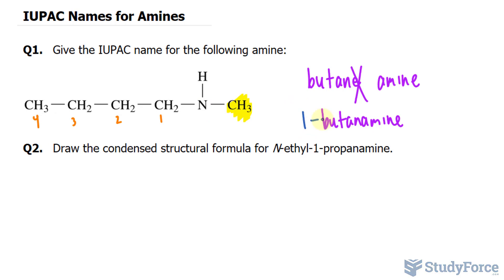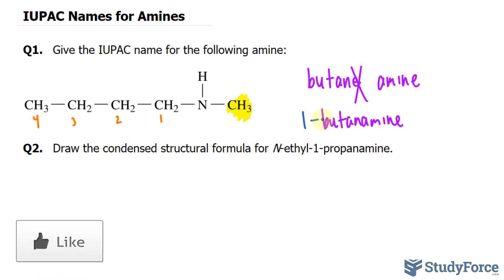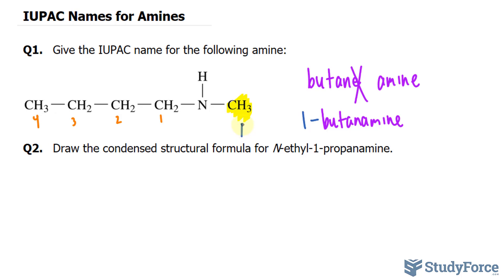Any alkyl group attached to the nitrogen atom is indicated by the prefix N. In our case here we have methyl, so we would write down N-methyl-1-butanamine. Also keep in mind that alkyl groups attached to the N atom are listed alphabetically. Since we only have methyl, we don't have to worry about that. So the name is N-methyl-1-butanamine.